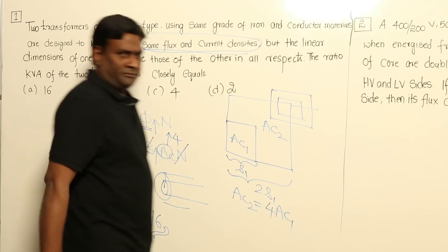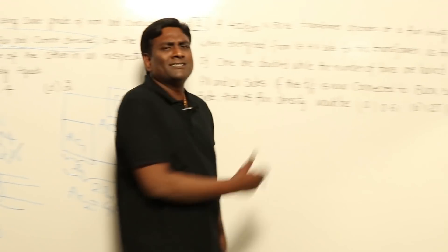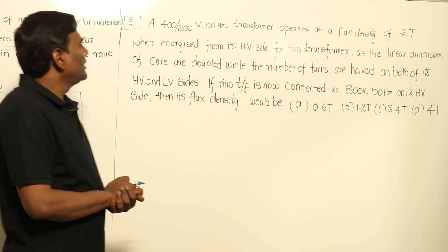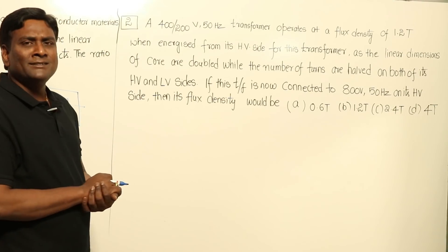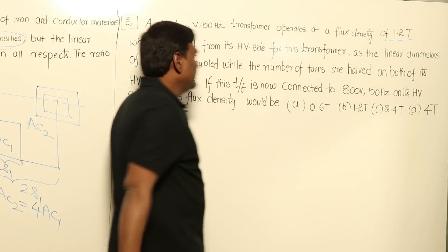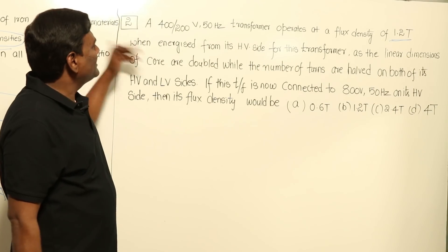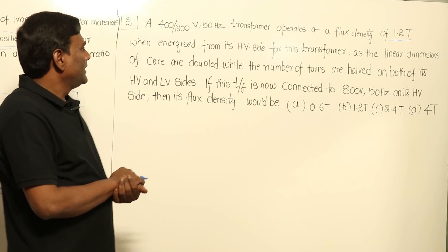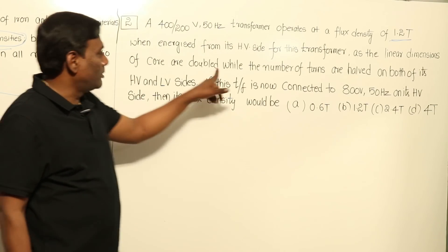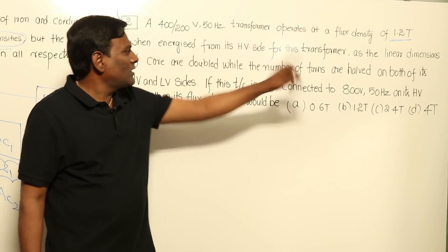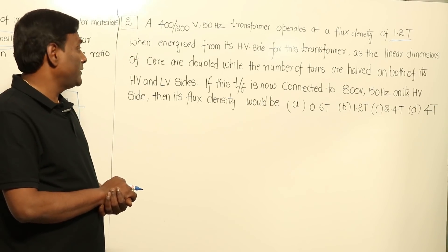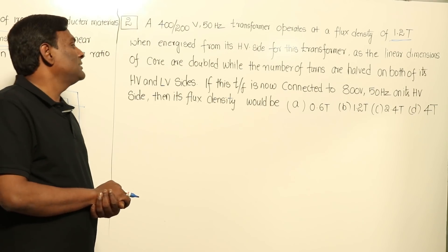The next is a similar design question. Given data: a 400V/200V, 50 Hz transformer operated at a flux density of 1.2 Tesla. A new transformer is designed where the linear dimensions of the core are doubled and the number of turns are halved on both HV and LV sides. If this new transformer is connected to 800 volts at 50 Hz on its HV side, what would the flux density be?